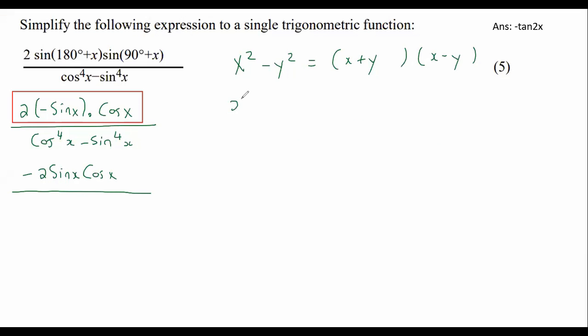Or sometimes we had x to the power of 4 minus y to the power of 4. Well, that would become x to the power of 2 minus y to the power of 2, and then x to the power of 2 plus y to the power of 2. And that is exactly what we have over here. See that? That's a difference of squares. And so I'm going to factorize that quickly into two brackets. And so that's going to be cos squared x minus sin squared x and then cos squared x plus sin squared x.